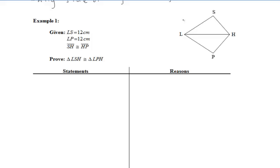In example one, the first thing to do is read your givens and label your diagram. You will not receive credit if you do not label your diagrams, so make sure you're including the given information — put tick marks on the diagram. Then let's see what we're working with so far.